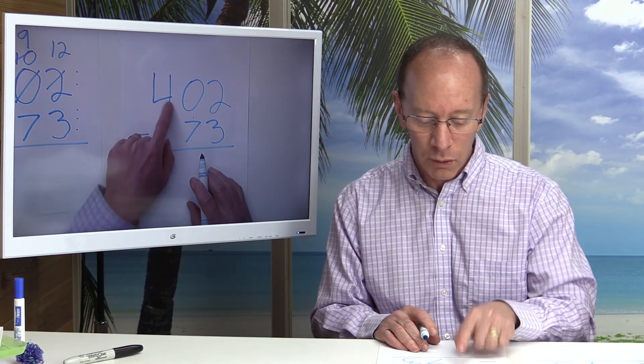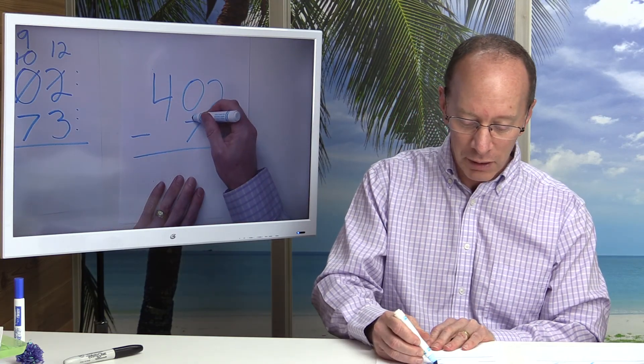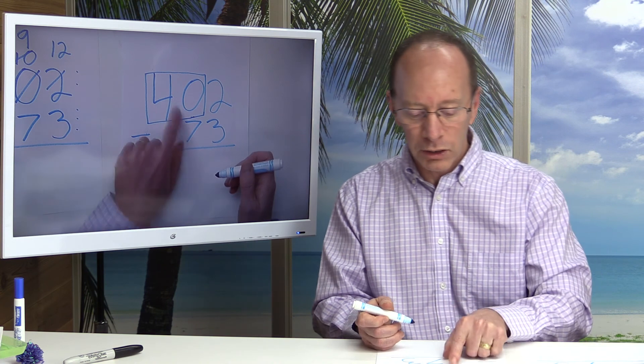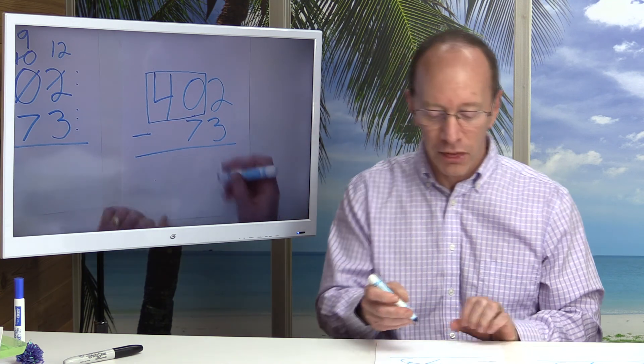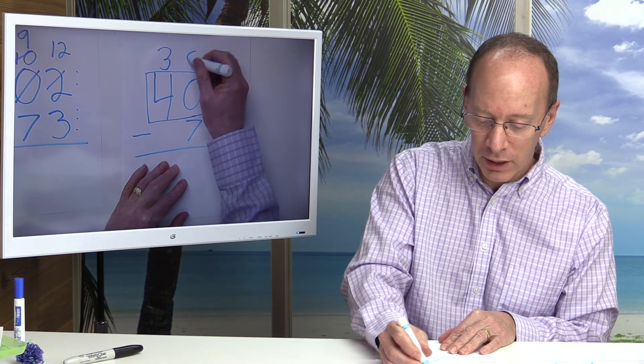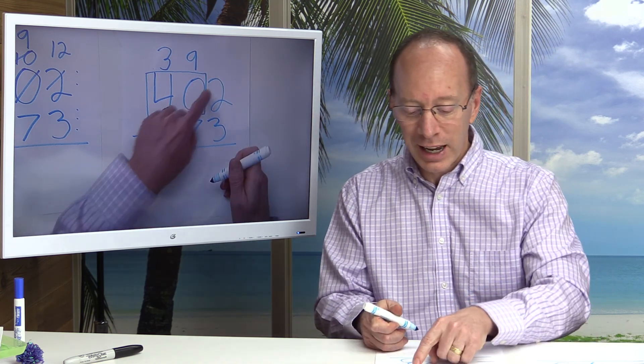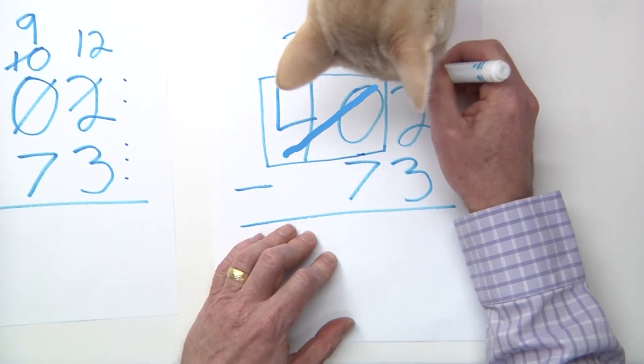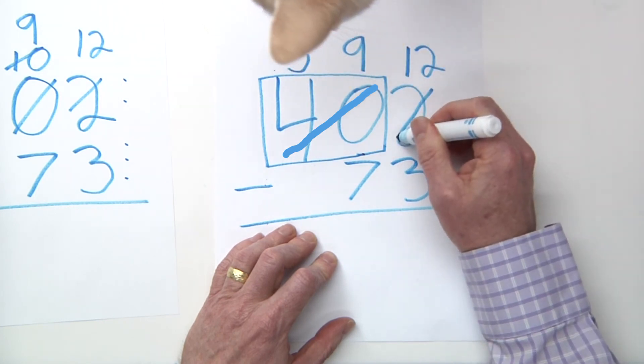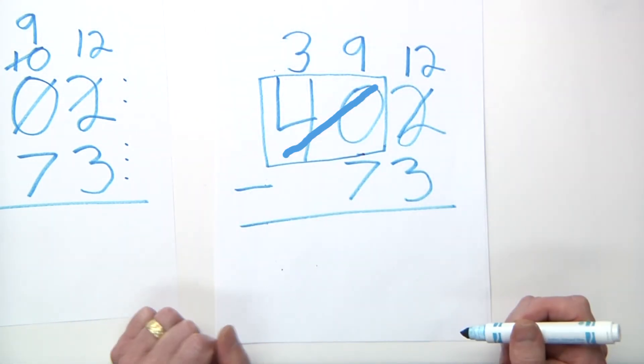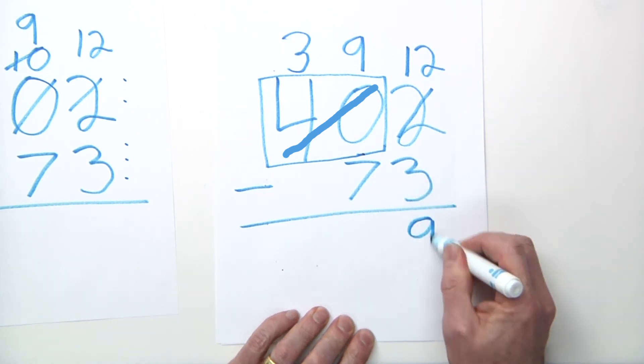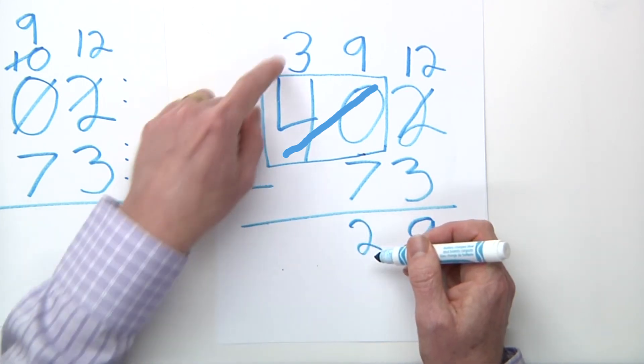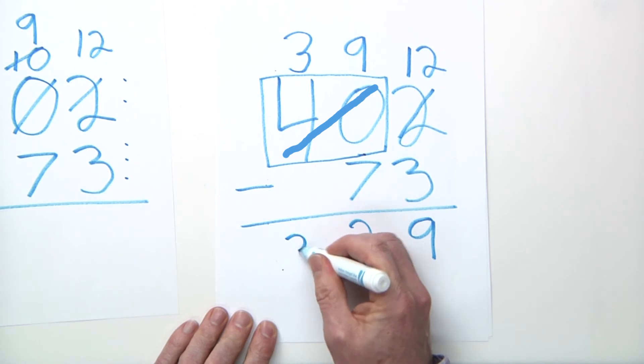What I'm going to do is I'm going to take this 40 right here, and I am going to make a box around this. And what is one less than 40? You're right, 39. So I put 39 right here. Then I can take that 10 and add it to the 2 here. So that will be 12. Cross out the 2. So now I can subtract. 12 minus 3? 9. 9 minus 7? 2. Then I just drop down the 3.